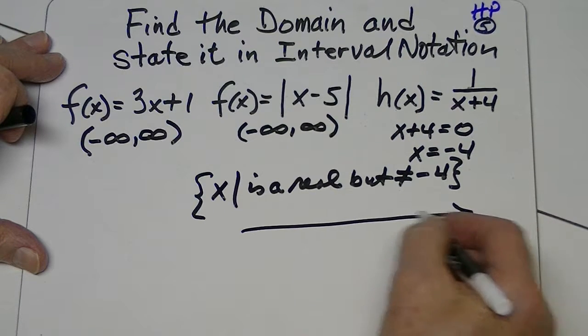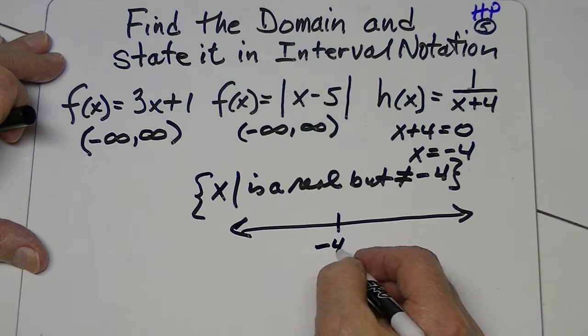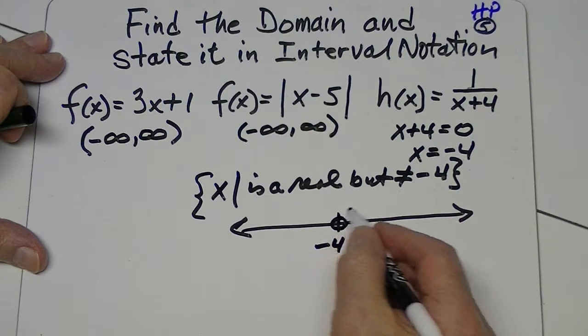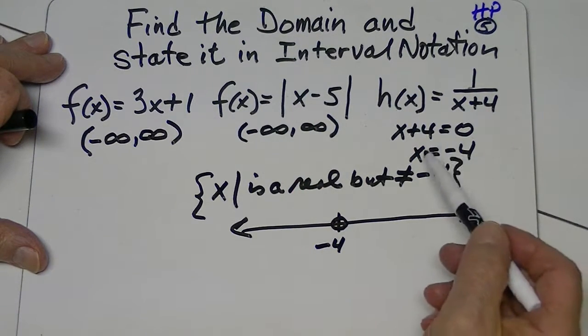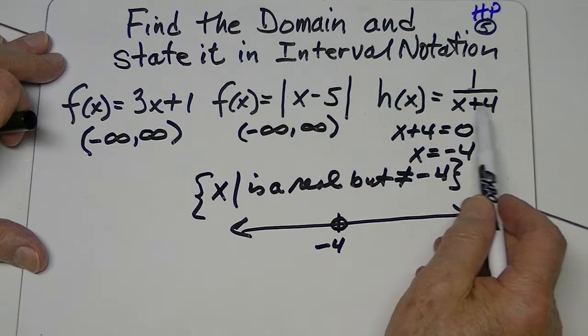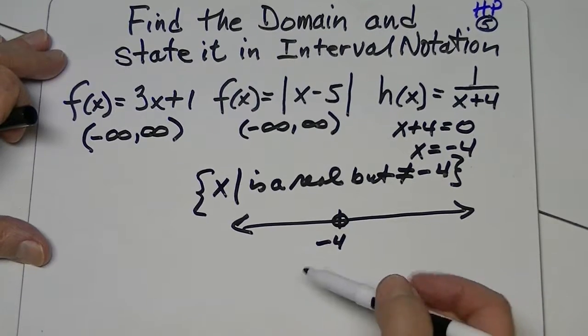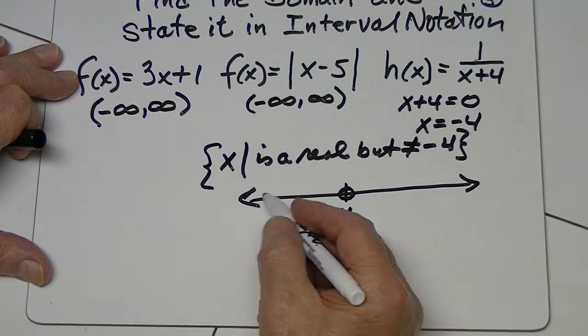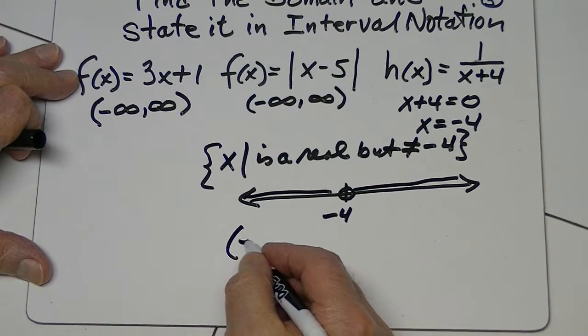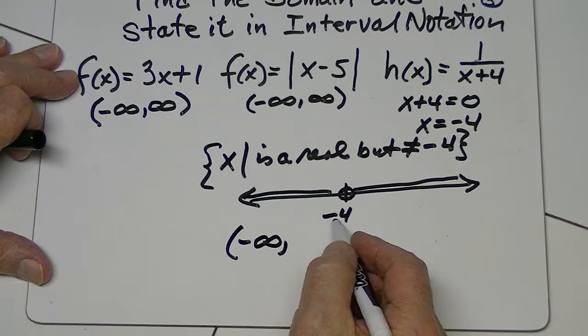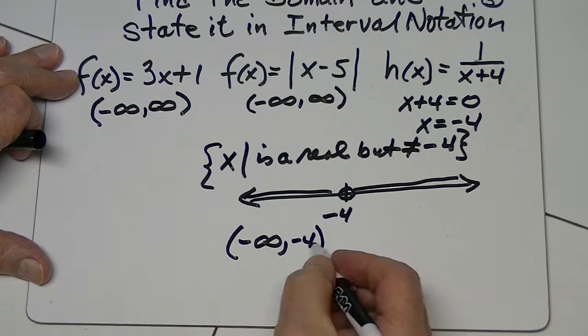On a number line, it would look like this, where negative four is not included in the domain. Because if it were, it would make our denominator a zero, and that's undefined. So how do I write that in interval notation? Well, all these other numbers are good. So it's coming from negative infinity, it goes up to negative four, and just before negative four it stops.